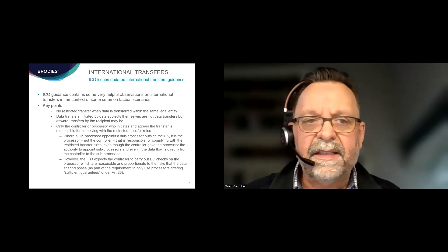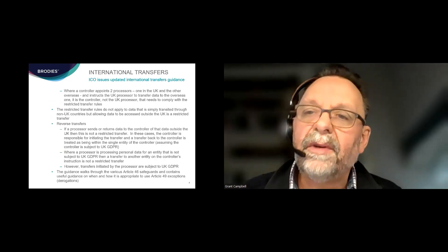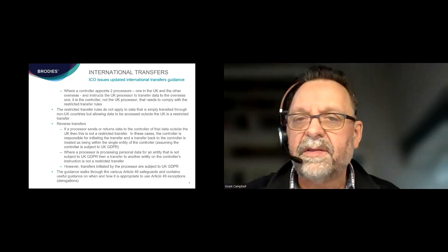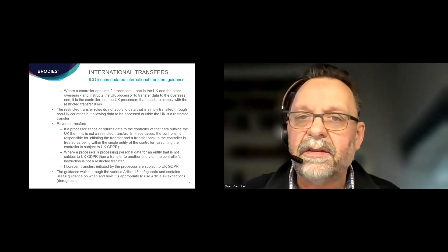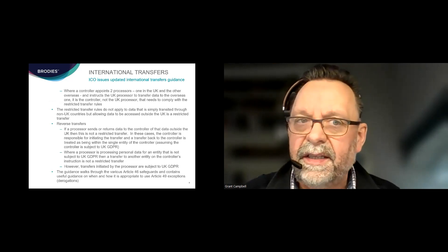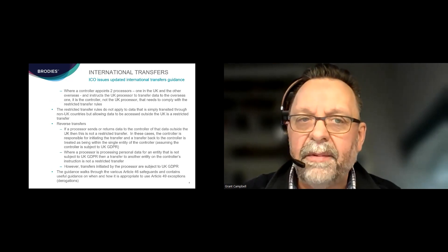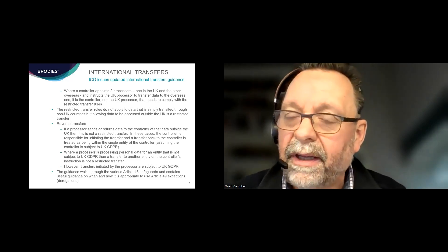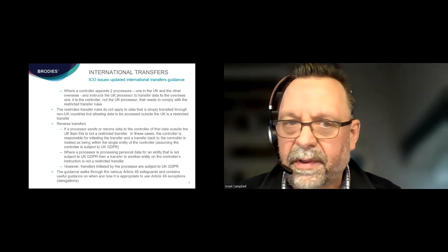The second example, again going back to who is initiating or agreeing the transfer: where a controller appoints two processors — one in the UK, one overseas — and instructs the UK processor to transfer data to the overseas one, in that case it's the controller, not the UK processor, that needs to comply with the restricted transfer rules. This is because it's not the processor initiating or agreeing the transfer; the relationship is with the controller.